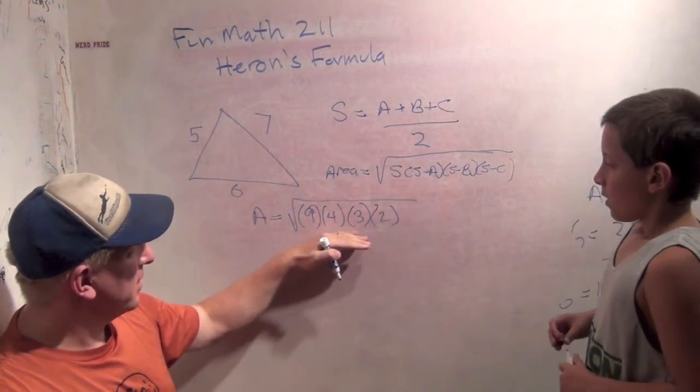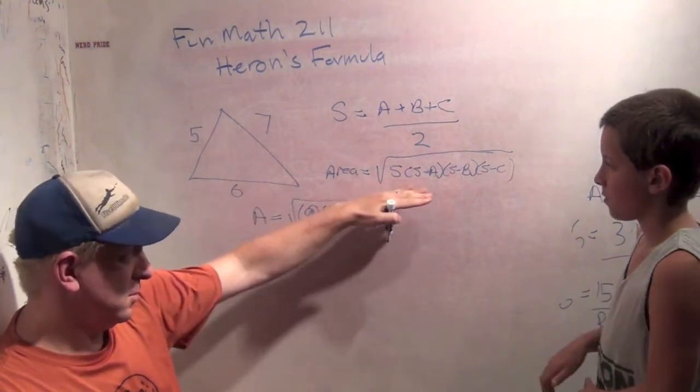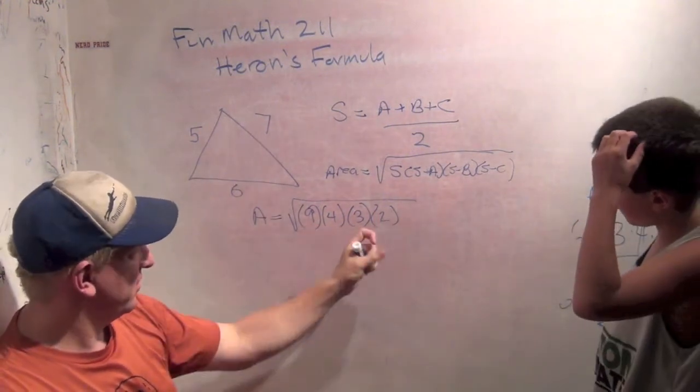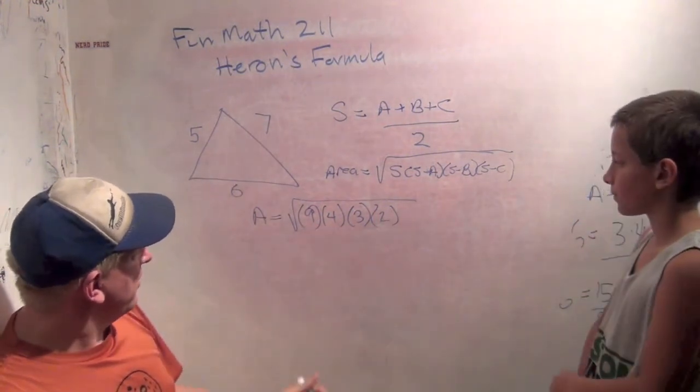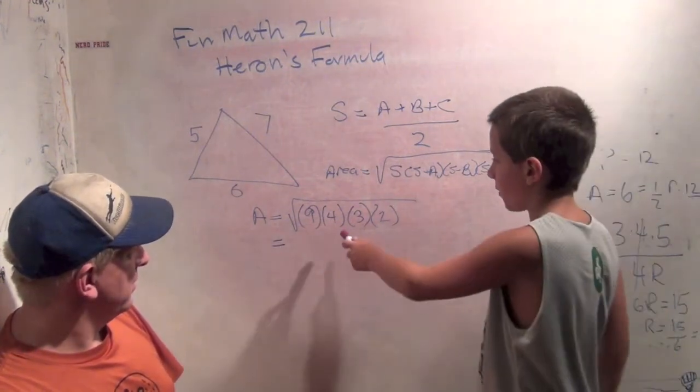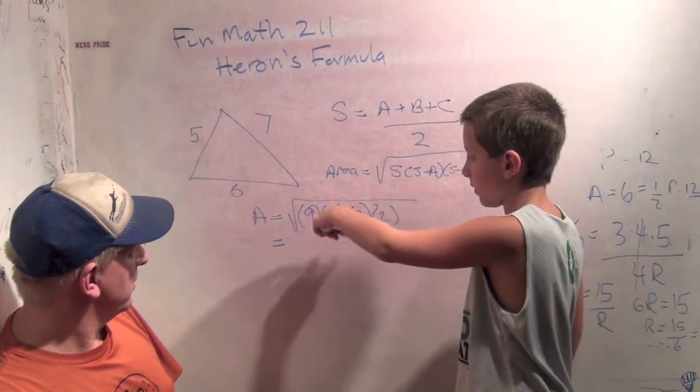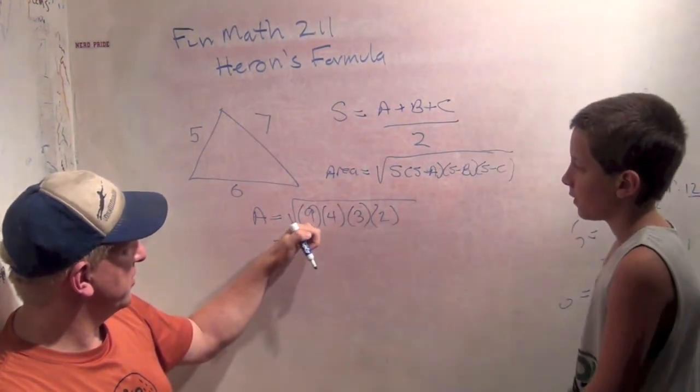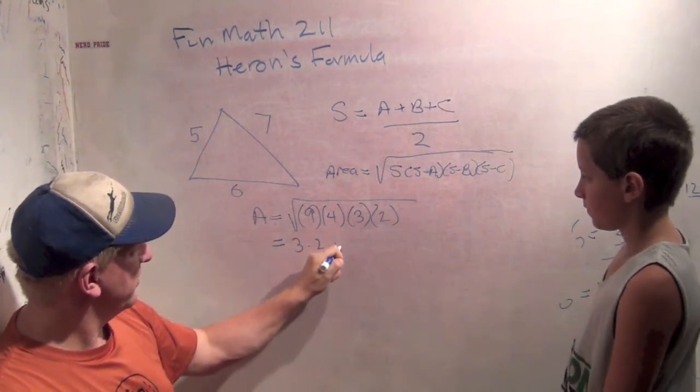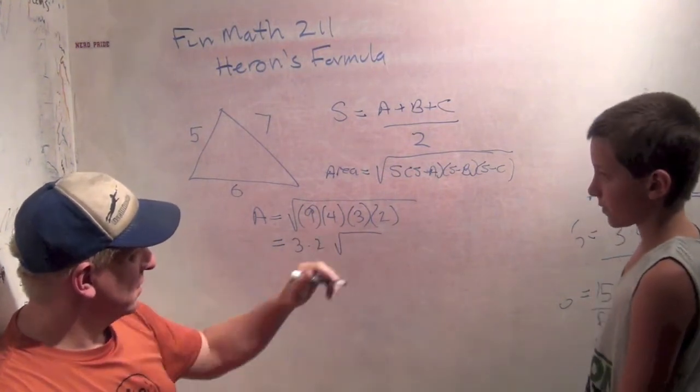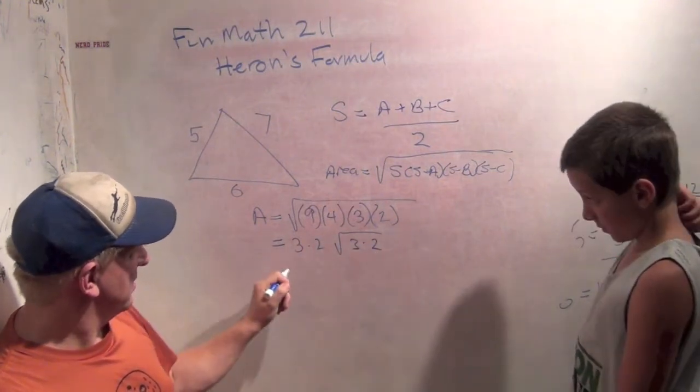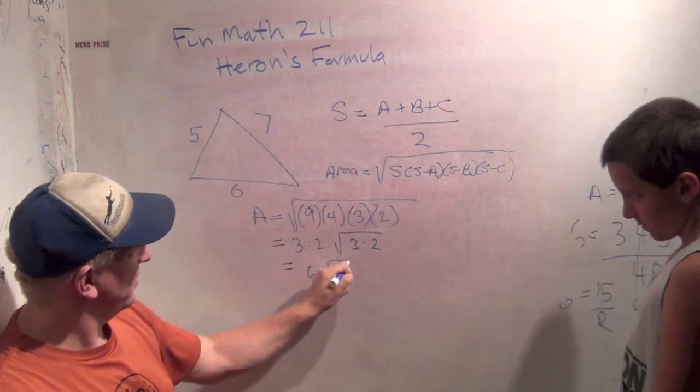Notice by the way that it doesn't matter what you call A, B, and C. I'm going to get 9 times 4 times 3 times 2 no matter what. Now before we multiply this out, do you notice a way you can simplify the square root before you multiply it out? You can bring these two out. What's the square root of 9 and the square root of 4? 3 and 2. So this is the same as 3 times 2 times the square root of 3 times 2, which simplifies to 6 times the square root of 6. How cool is that?